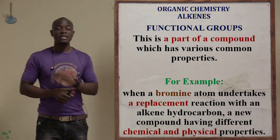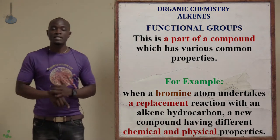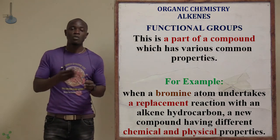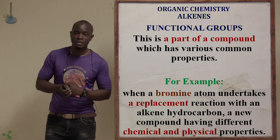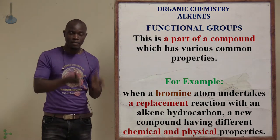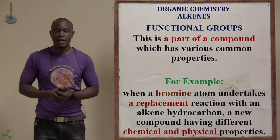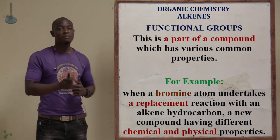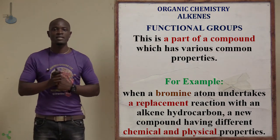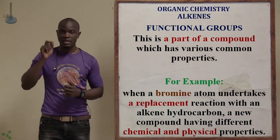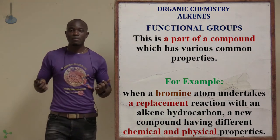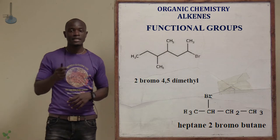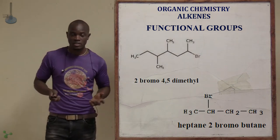A functional group is a part of a compound which has a characteristic set of properties. Different functional groups form branches in the hydrocarbon. For example, if bromine reacts with an alkene, bromine is integrated into the structure of the alkene.